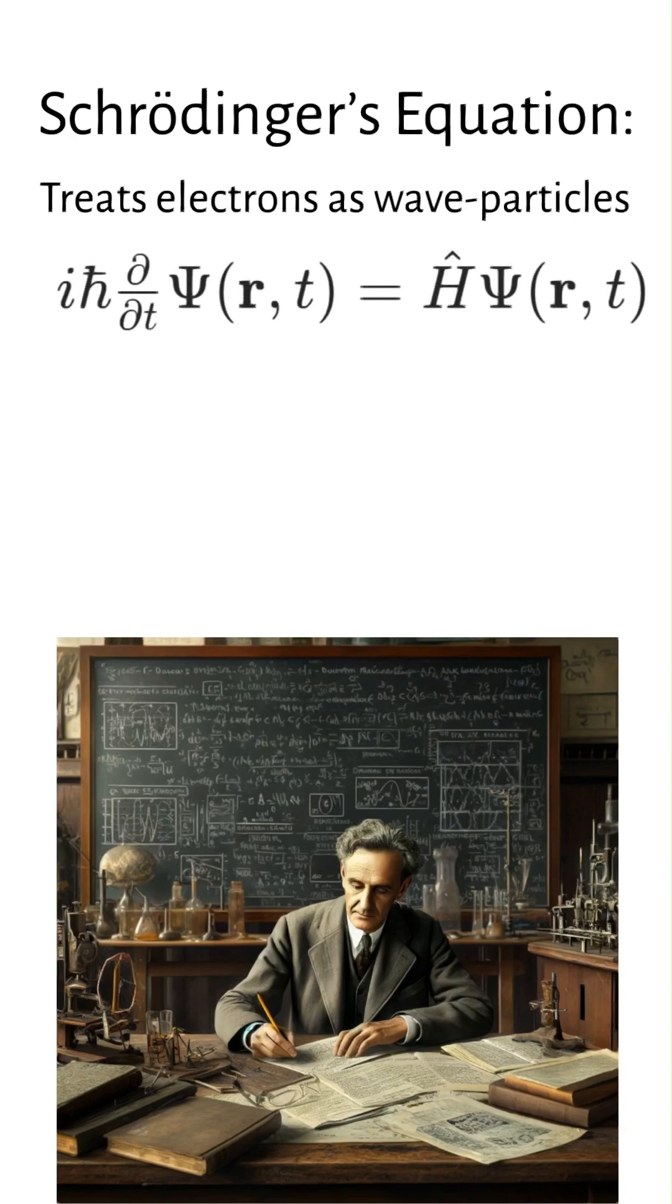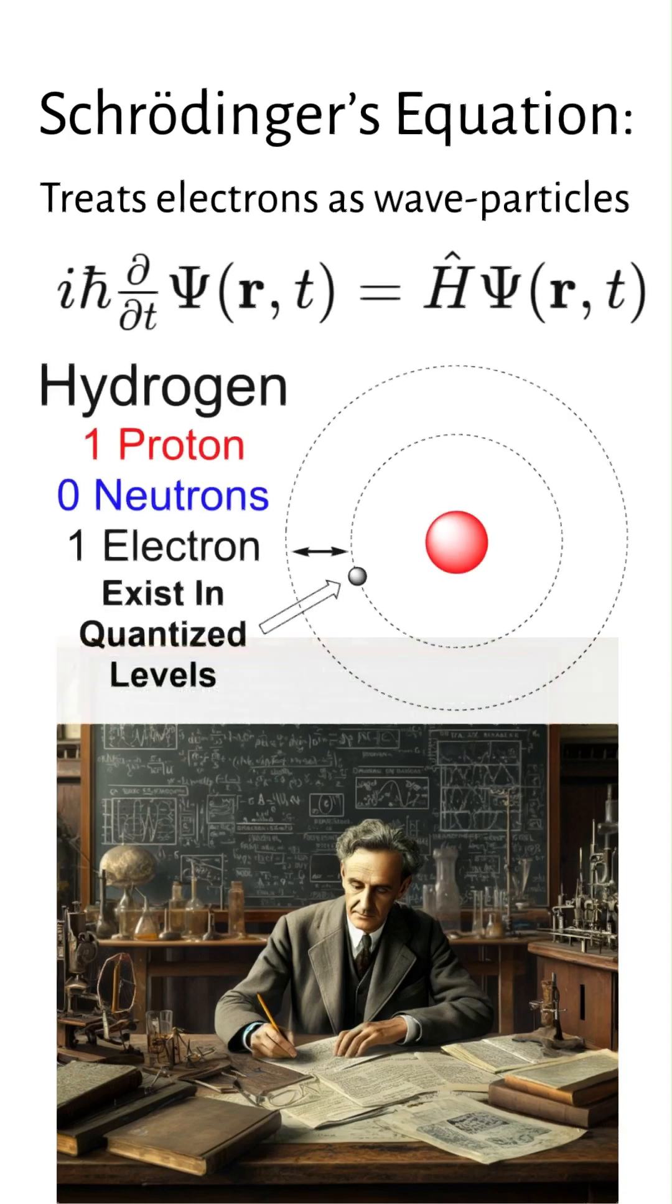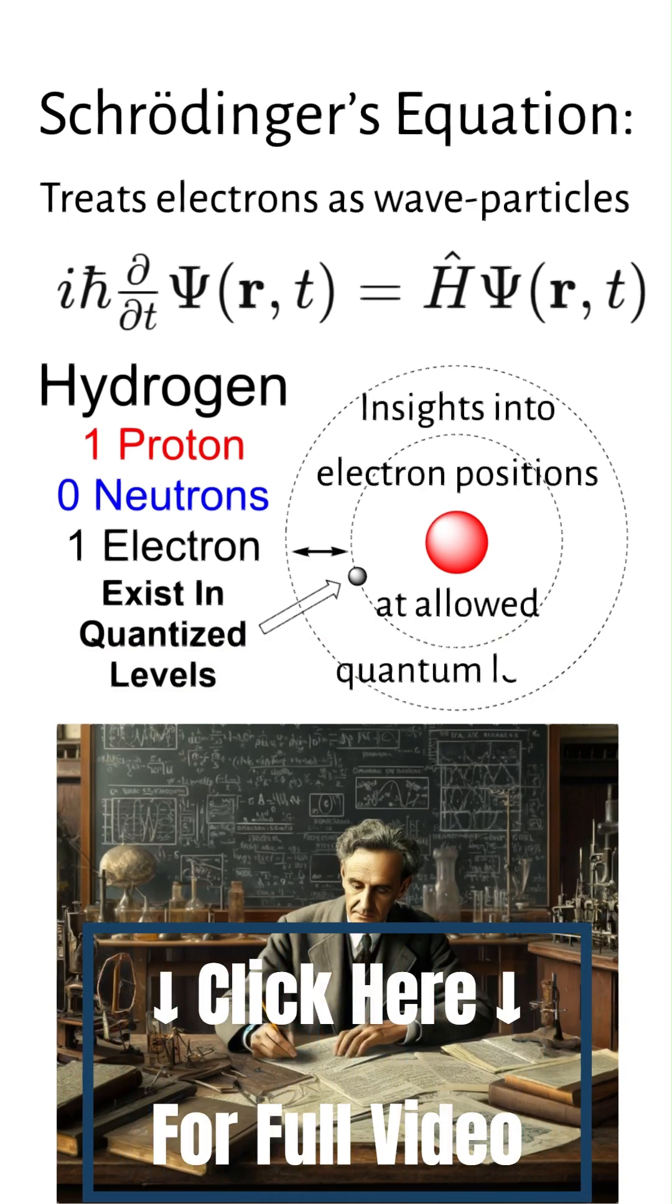While Schrödinger's equation is mathematically complex, its application to the hydrogen atom revealed profound insights into electron positions at allowed quantum levels.